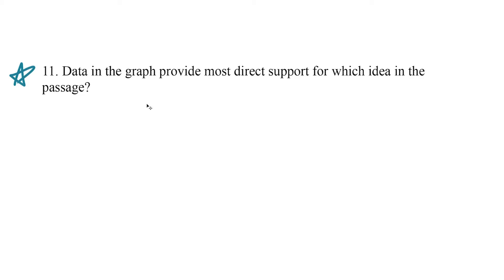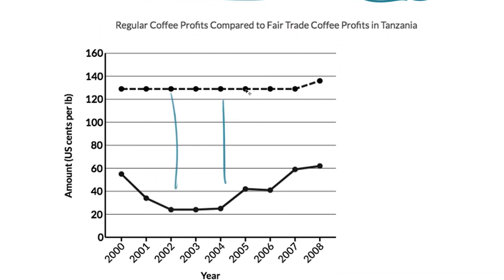Data in the graph provide the most direct support for which idea in the passage? Let's take a look at that graph one more time.